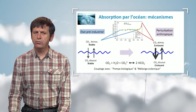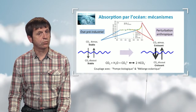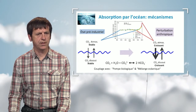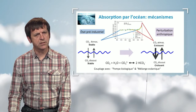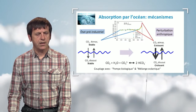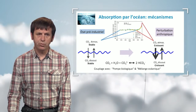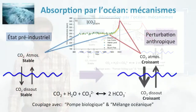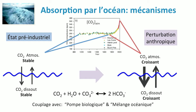We will now try to understand the mechanisms connected with the carbon sinks, starting with the ocean. The curve in the middle of the slide shows the evolution over the last millennium of CO2 concentrations. During the pre-industrial era, the exchanges between the atmosphere and the ocean were two opposing flows — CO2 being dissolved in the ocean in a quantity proportional to the CO2 in the atmosphere. Once CO2 is dissolved in the ocean, it reacts with carbonate ions to form bicarbonate.